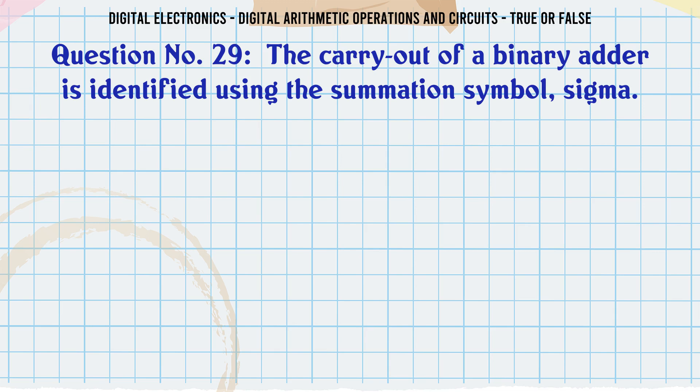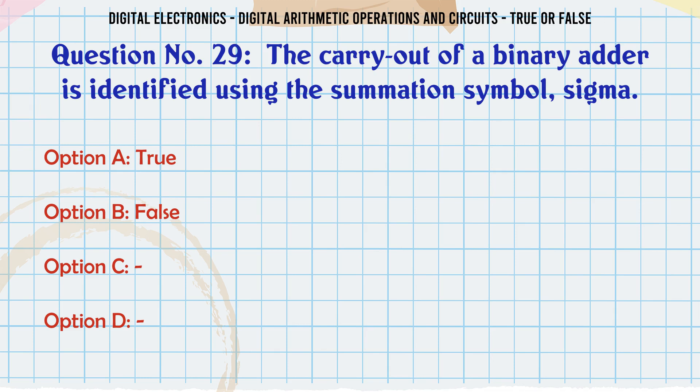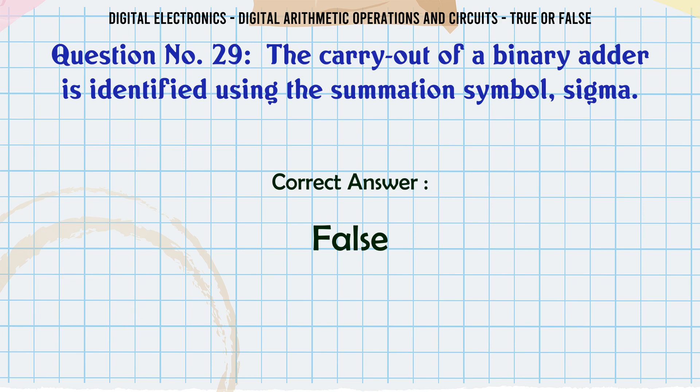The carry out of a binary adder is identified using the summation symbol sigma. True or False? The correct answer is False.